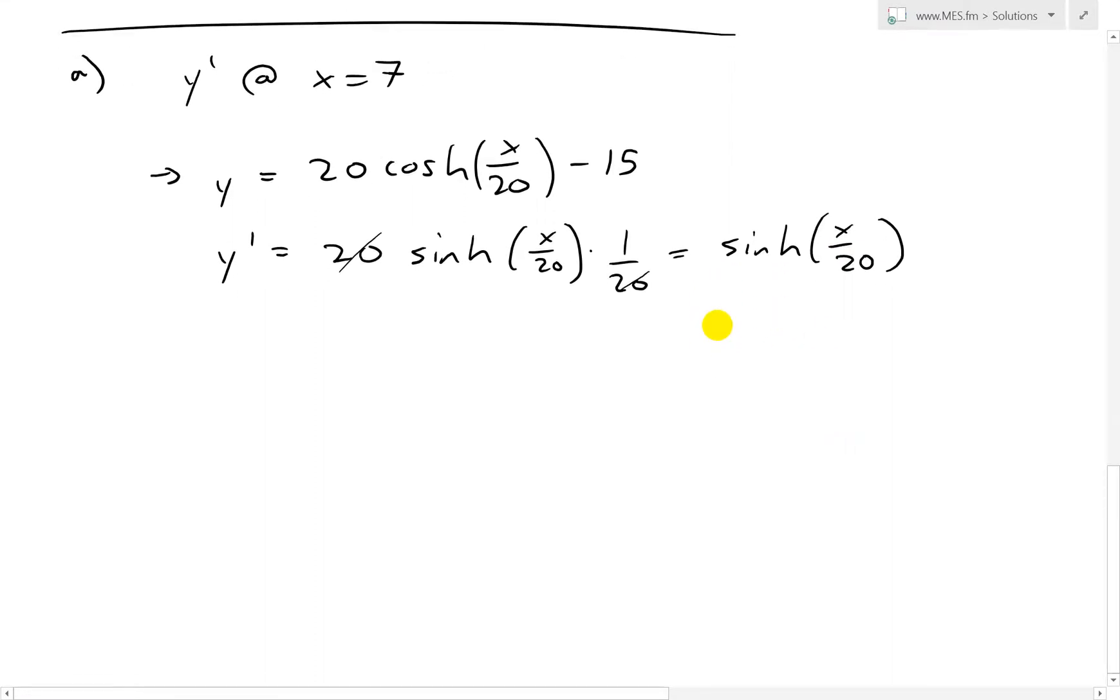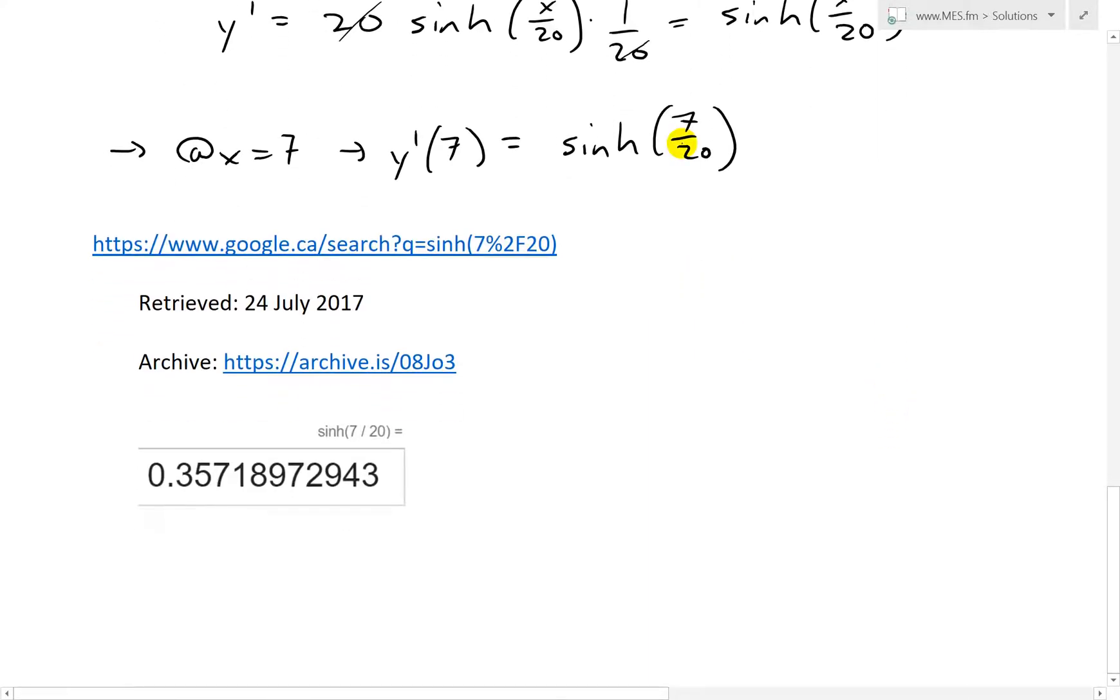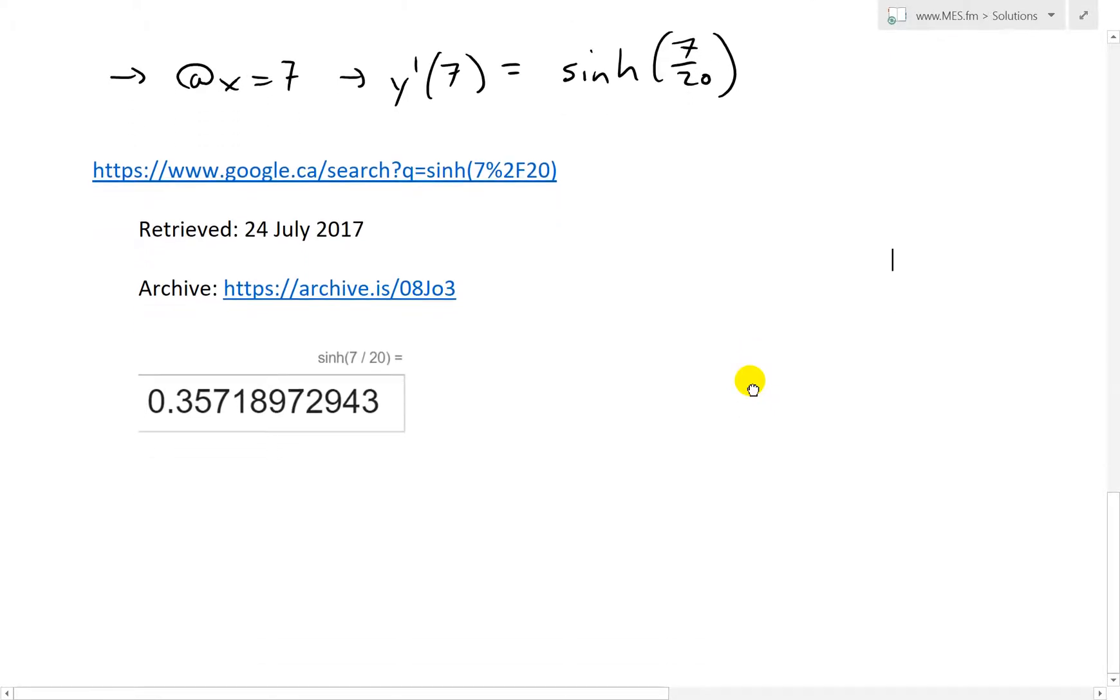So that is the derivative. So then we need to look at x equals 7. That's on the right pole. So at x equals 7, we have y prime of 7 equals sinh 7 over 20. And now if you just put that in a calculator right here, I've done it on just a Google calculator when you search it and you get sinh 7 over 20 equals 0.357189.